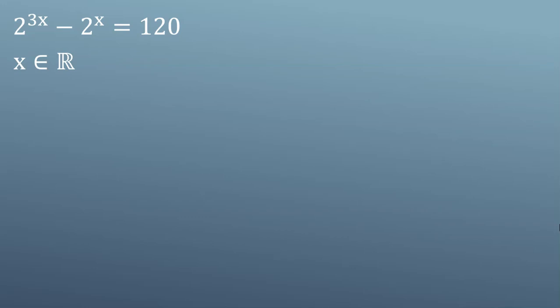We have 2^(3x) - 2^x = 120, where x is a real number, and we want to find x. Please don't forget to thumbs up, subscribe, and turn on the bell. Let's start.